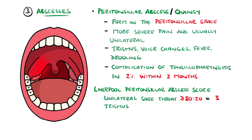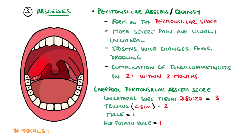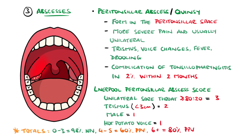The Liverpool score includes three points for a unilateral sore throat with at least 80/20 predominance on one side, two points for trismus of less than three centimeters, and one point each for male sex and hot potato voice. Total scores of zero to three have a 98% negative predictive value, while scores of four to five or six or above have a 60% and 80% respectively positive predictive value.